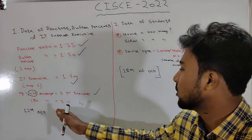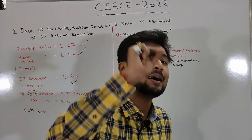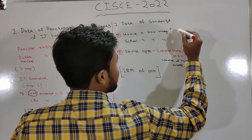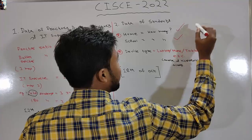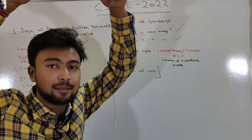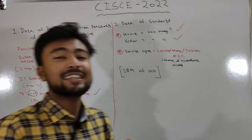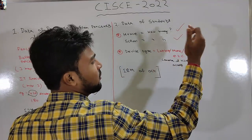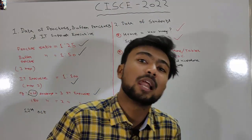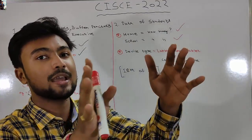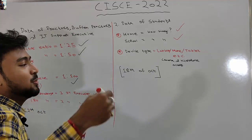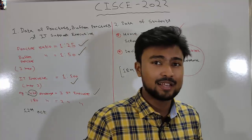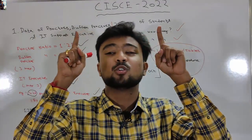Schools must submit all this data to the CIC council by 18th October. The second type of data required is student data: how many students are giving exams at home versus at school. The CIC council also needs to know which device students will use — laptop, phone, or tablet. You must inform your school, which will then pass this information on to the CIC council. Importantly, your device must have camera and microphone access, as this is mandatory for the online proctored examination.